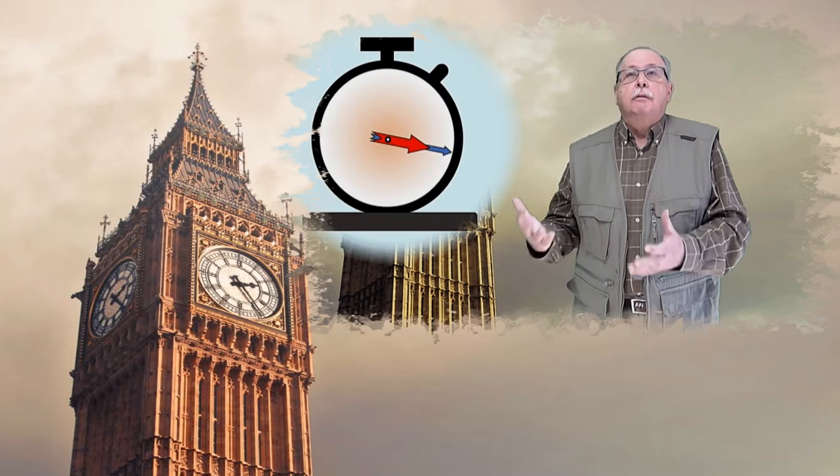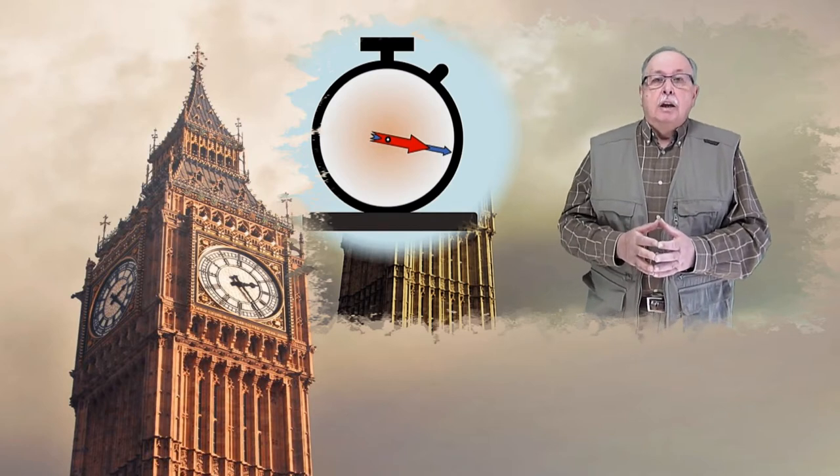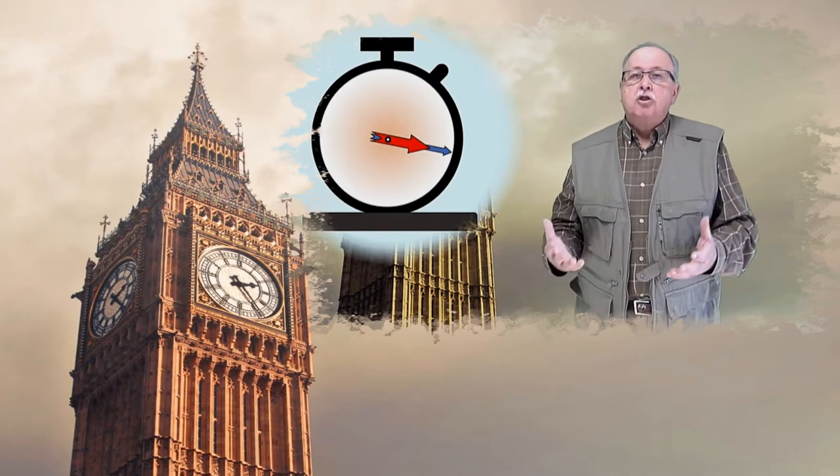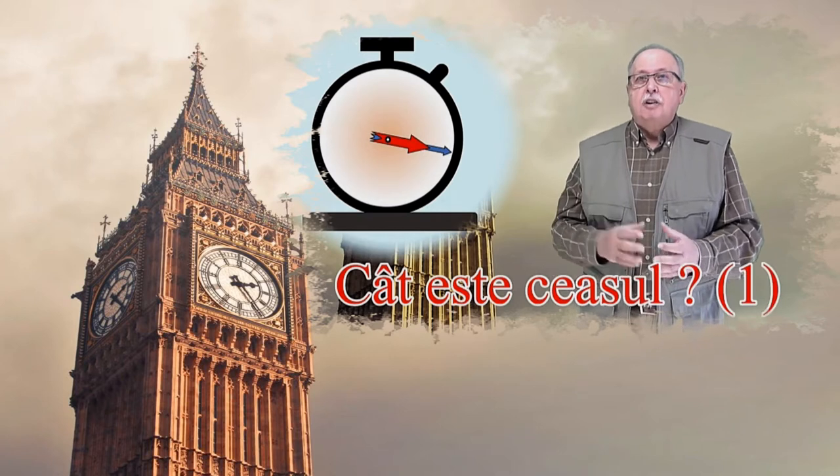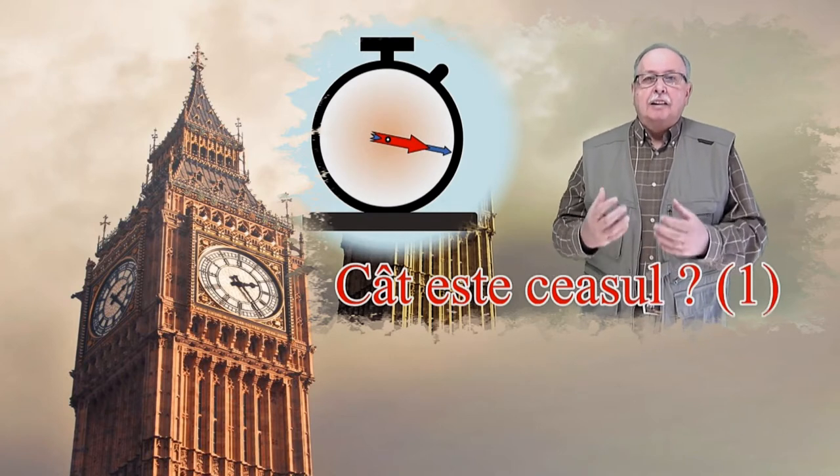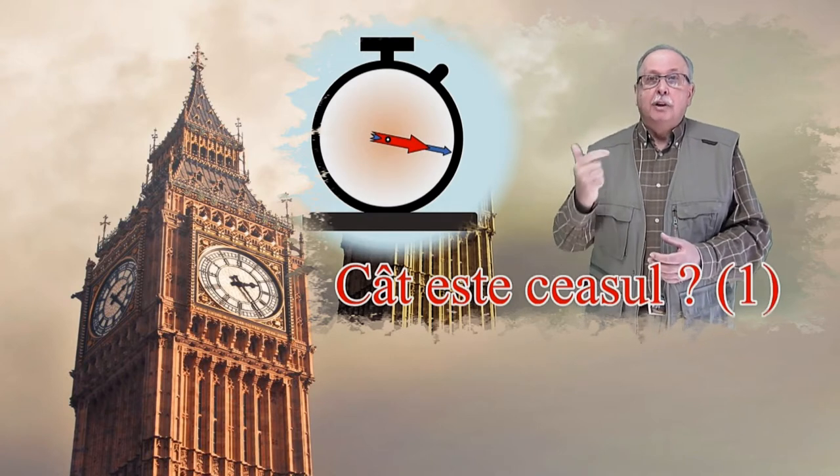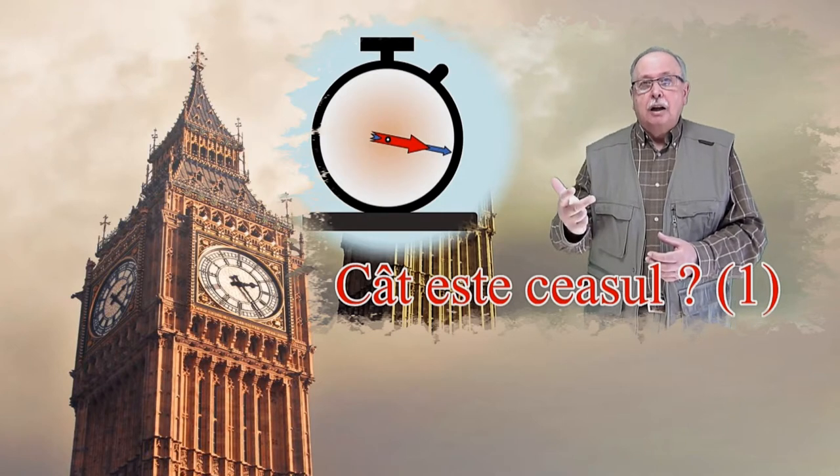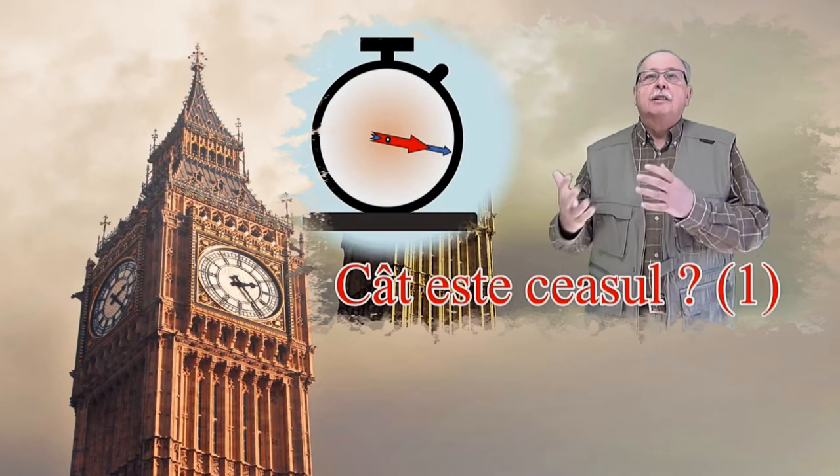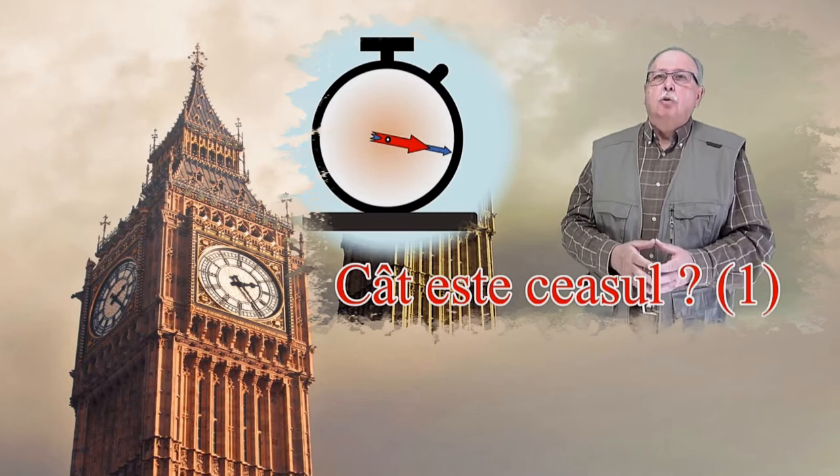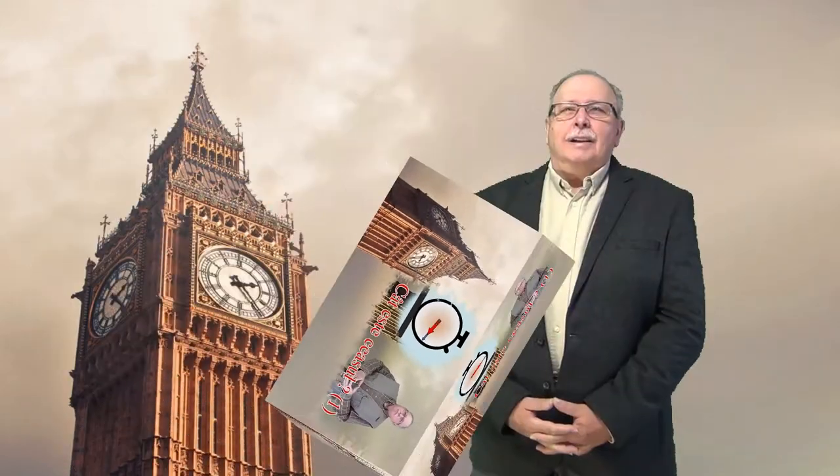Gândiți-vă că vedeți o fotografie a ceasului. Și întrebarea este cât este ceasul, dar fac o precizare. Cât este ceasul exact, adică ora, minutul și secunda. La secunde va trebui să rotunjiți, probabil, la un număr întreg. În ciuda aparențelor, răspunsul este ușor de găsit.